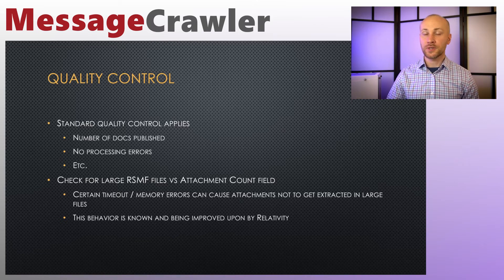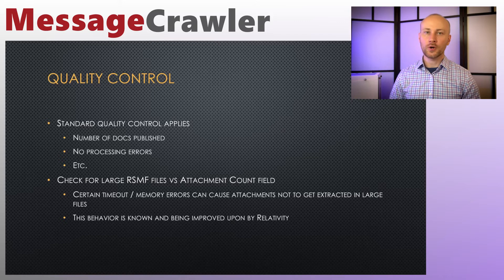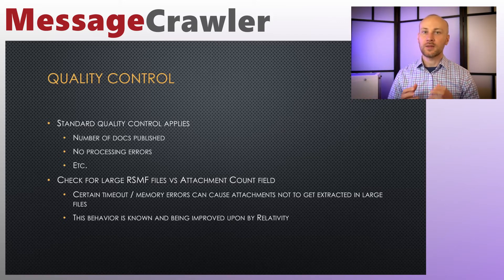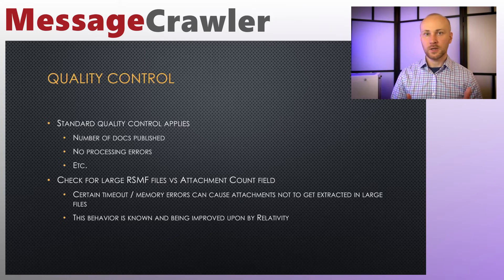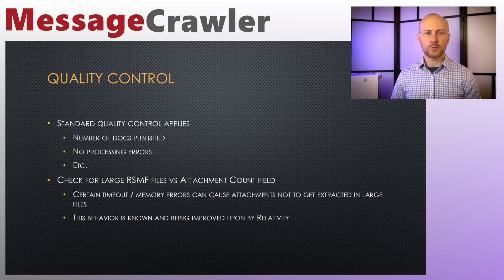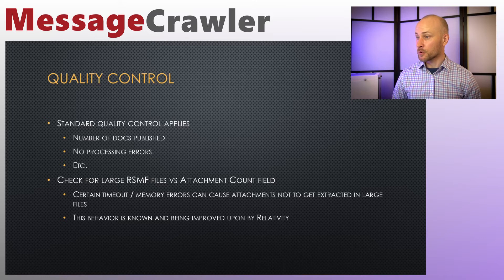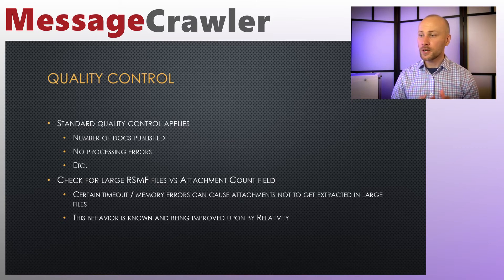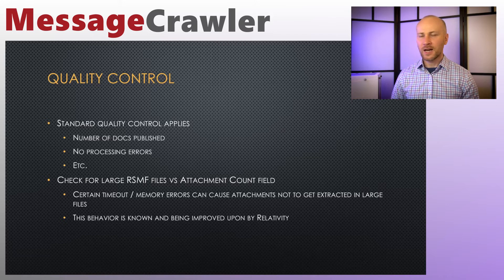Quality control: standard quality control applies. Make sure you do not receive any processing errors — if you do, deal with them appropriately: retry, ignore, do whatever you have to. Make sure your documents get published and that the number of unpublished documents is zero. Follow all the normal procedures you use when doing processing in Relativity. However, there is one more check I encourage people to do, and that deals with large RSMF files.